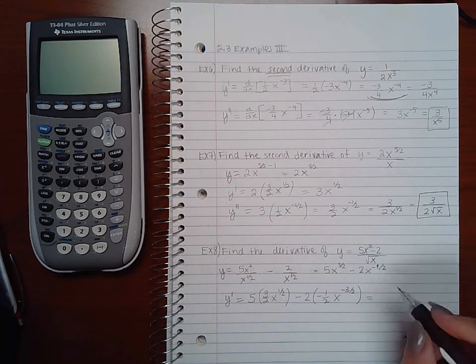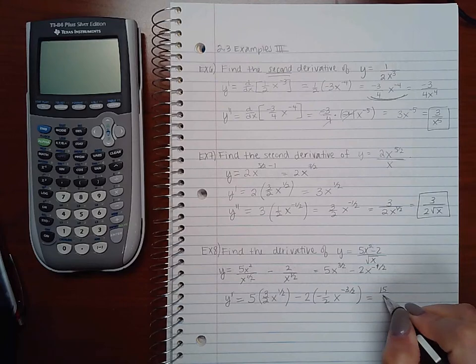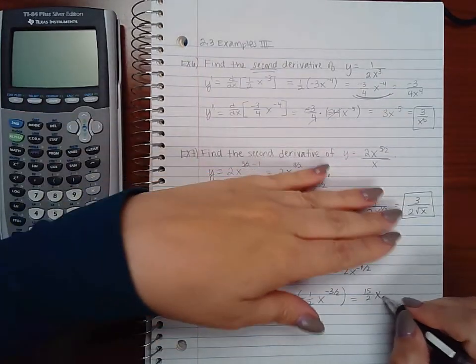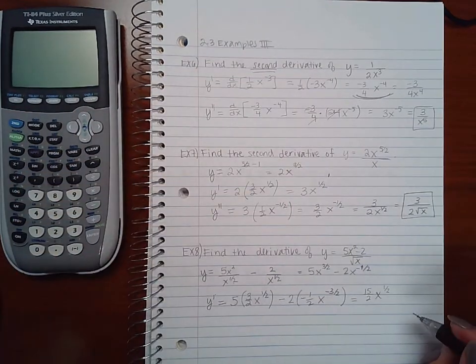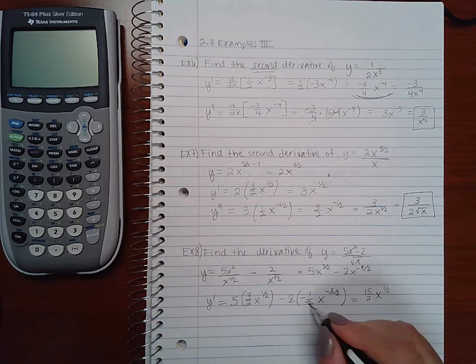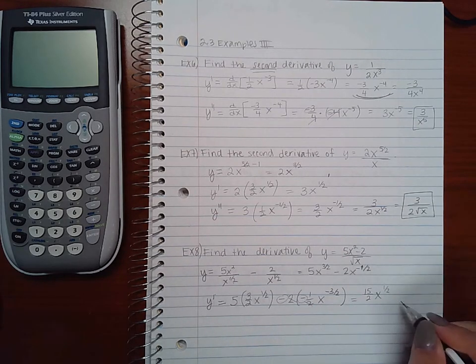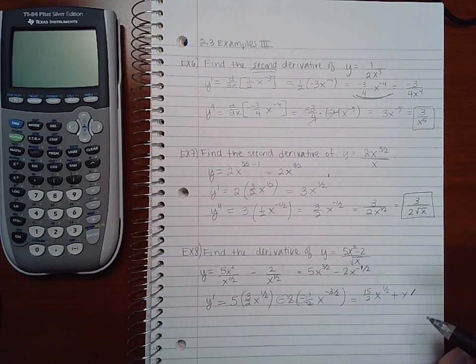We can simplify this a little bit. We get 15 over 2x to the 1 half. And then here, the 2's will cancel. And then a negative will give me positive x to the negative 3 halves.